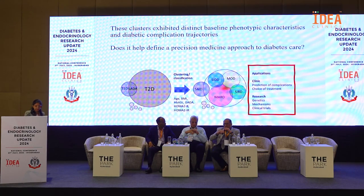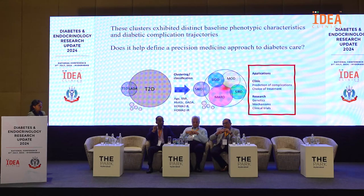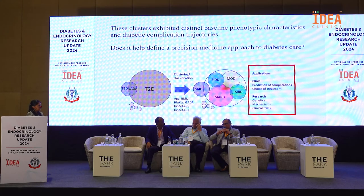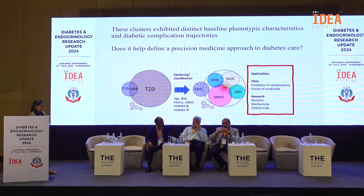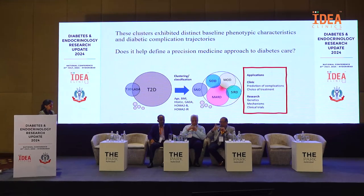Type 2 diabetes involves both insulin resistance and insulin deficiency, but we see different phenotypes — it's not a homogeneous disease. There's a lot of heterogeneity, with some patients at very high risk of complications and others who don't maintain good glycemic control but still escape complications. We've always wanted to identify people at greater risk of complications so we can be more aggressive in preventing them, since data from all major studies shows good glycemic control and management of comorbidities prevents complications.